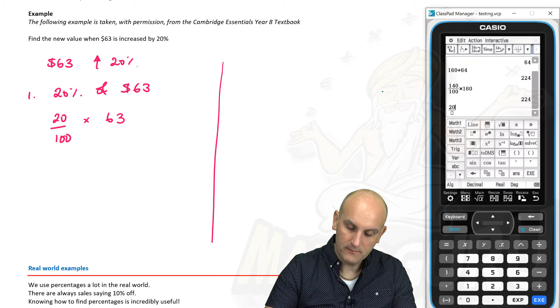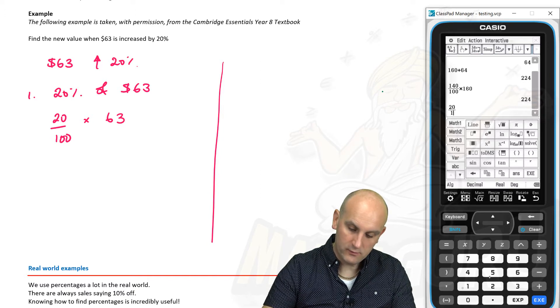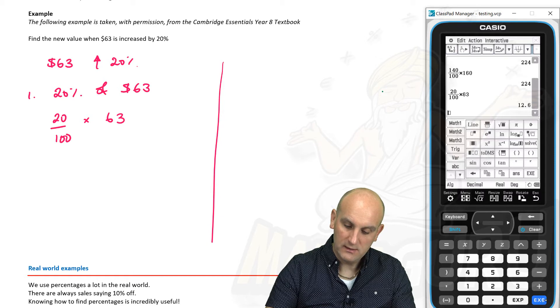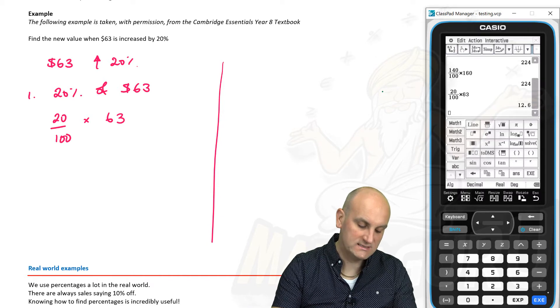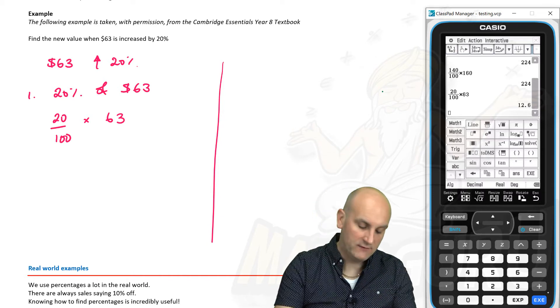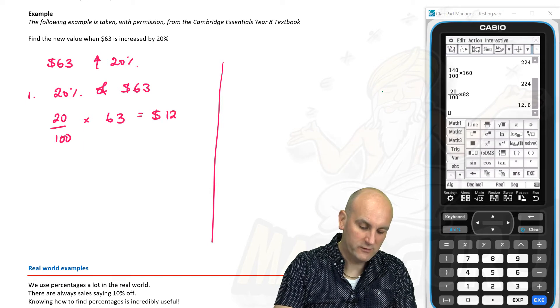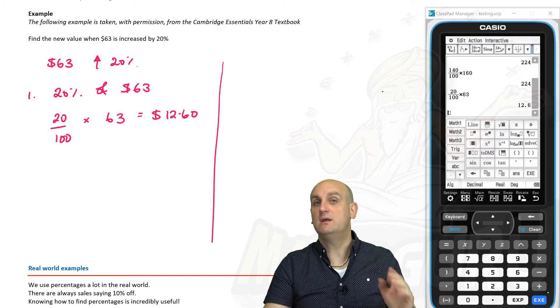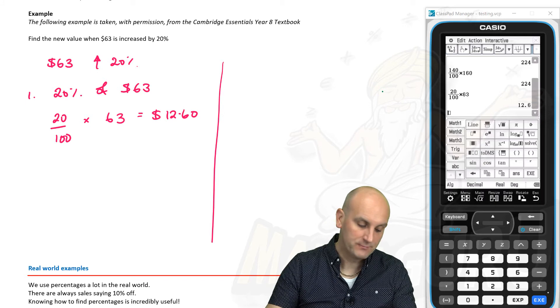And we know that's 20 divided by 100 times 63. So 20 divided by 100, and we're going to multiply that by 63. Gives me 12.6. Now, because this is money, I have to be careful. That's $12.60. Remember, your calculator is a dumb piece of machinery.